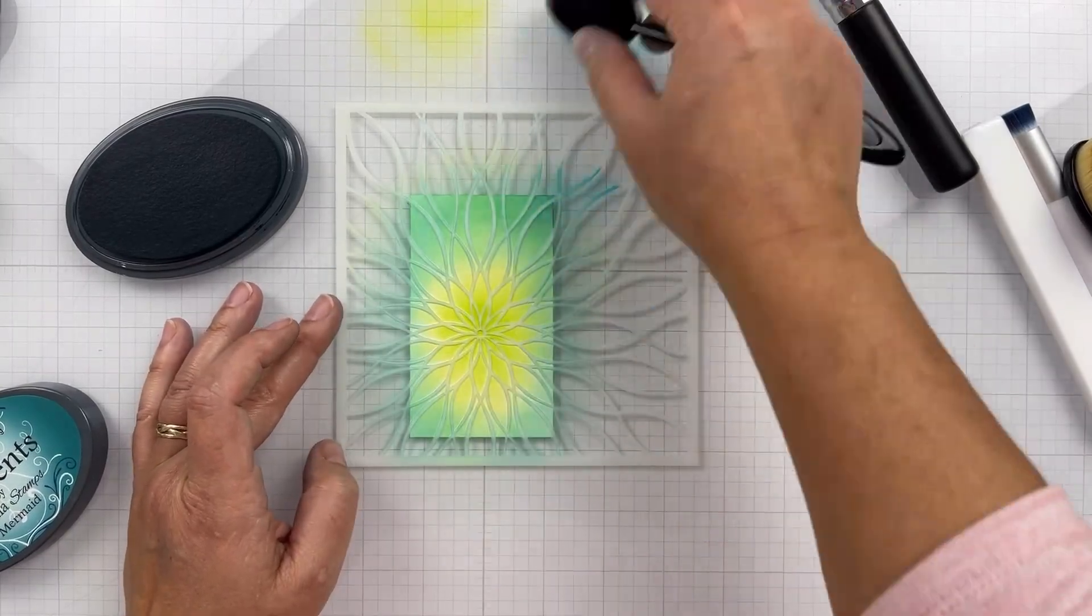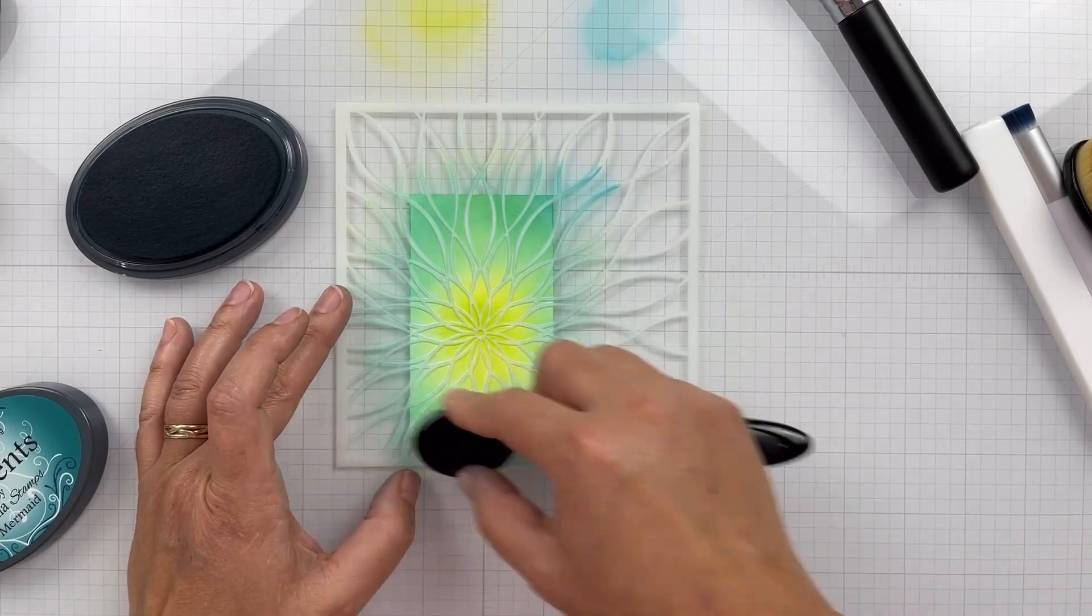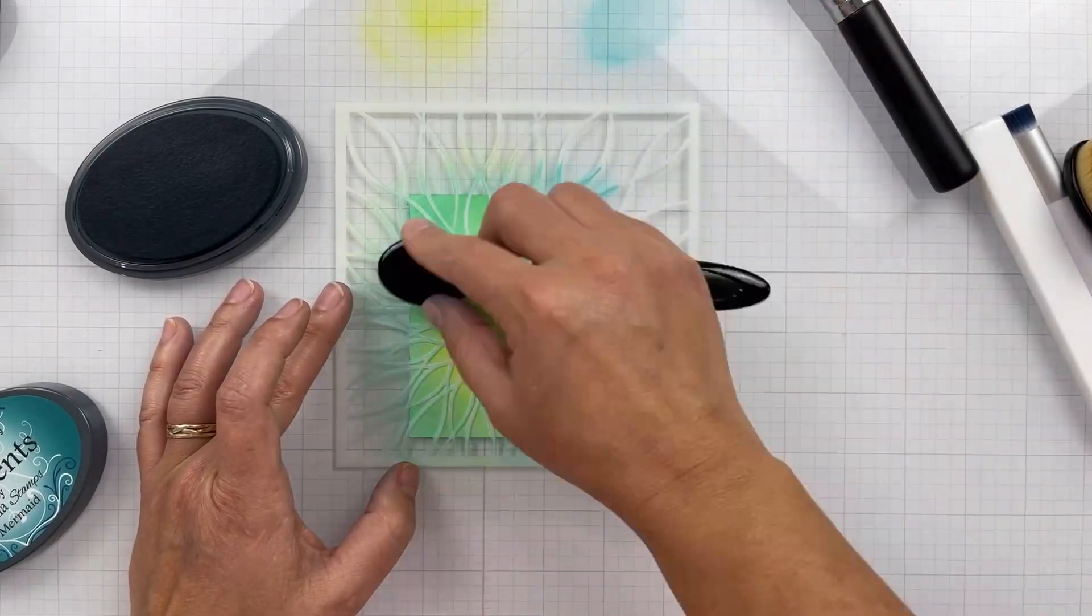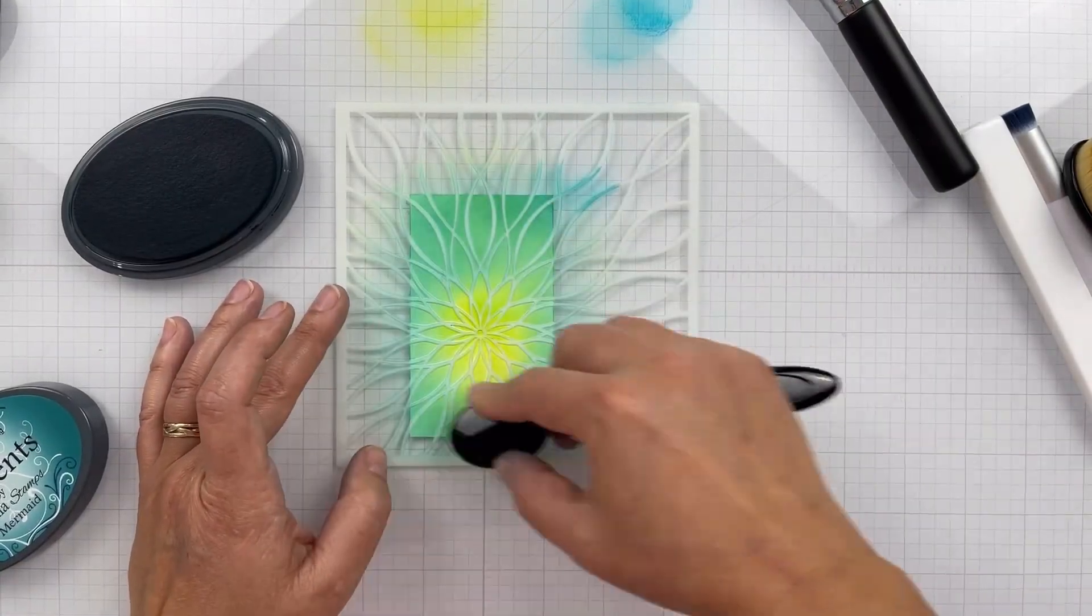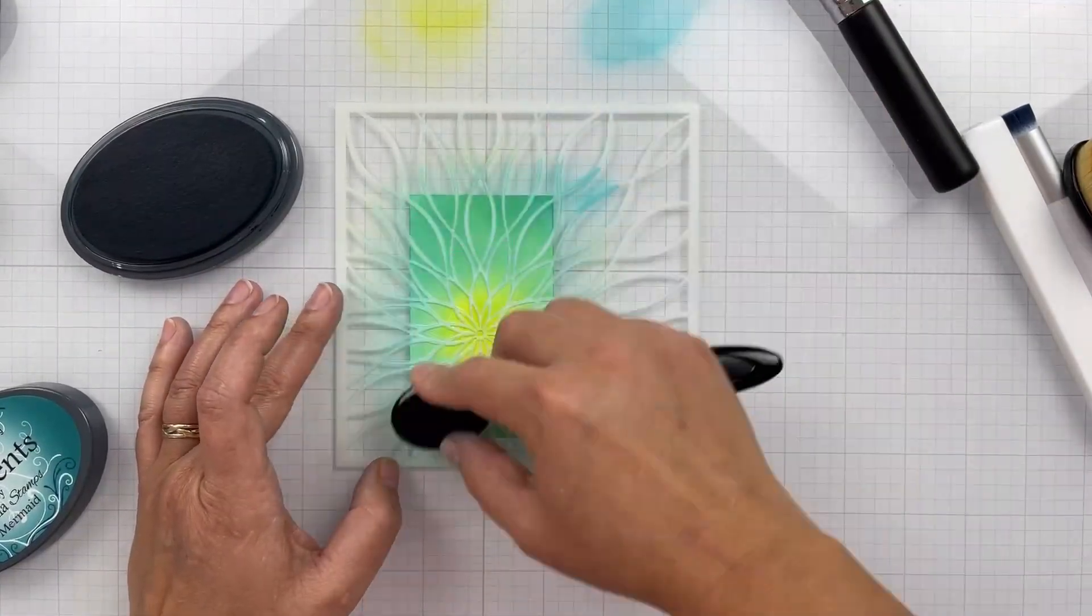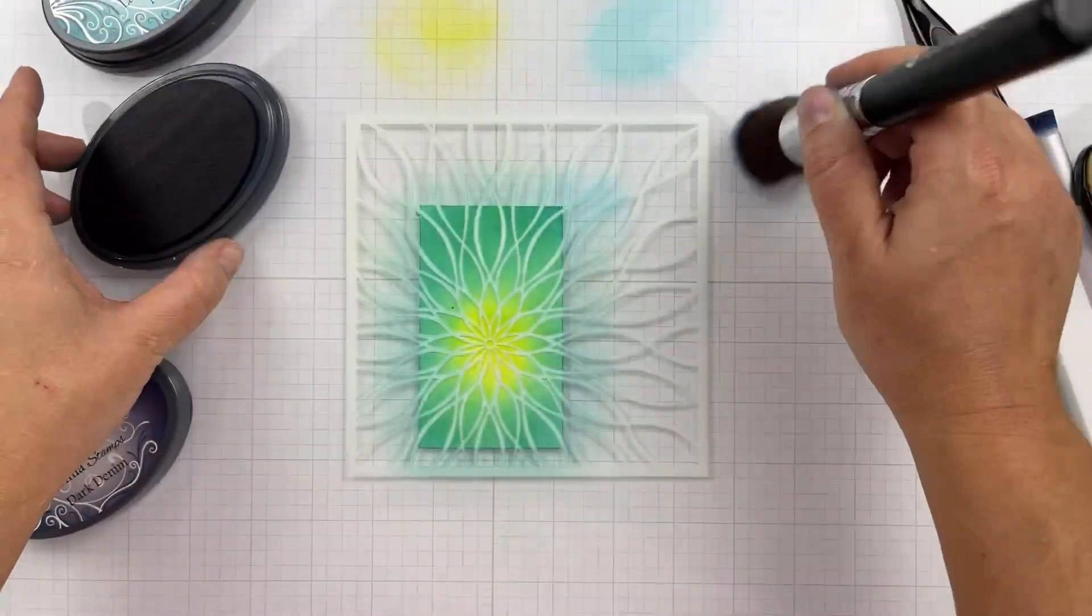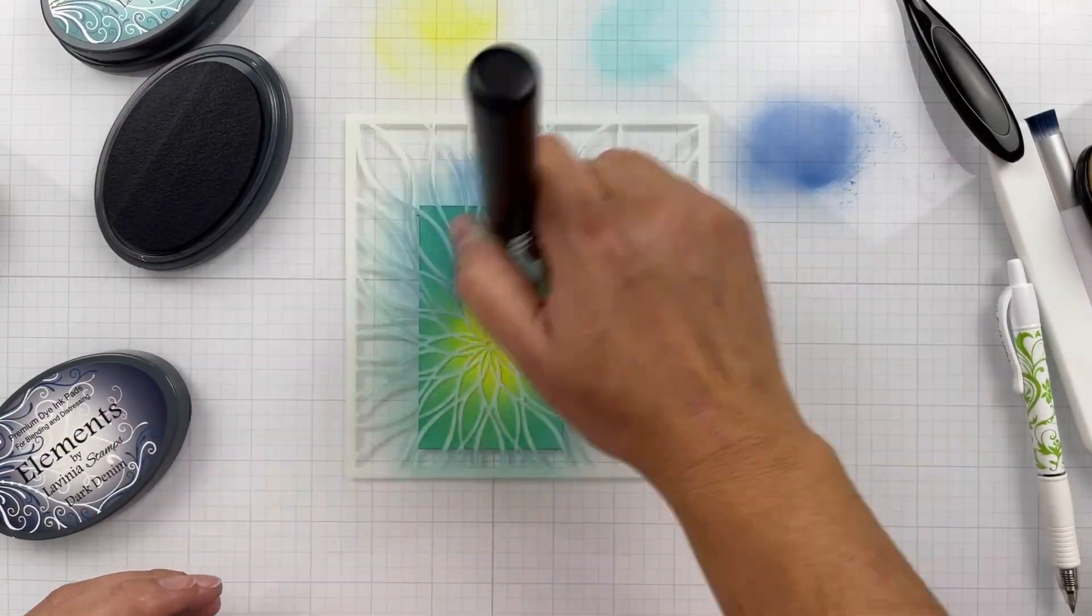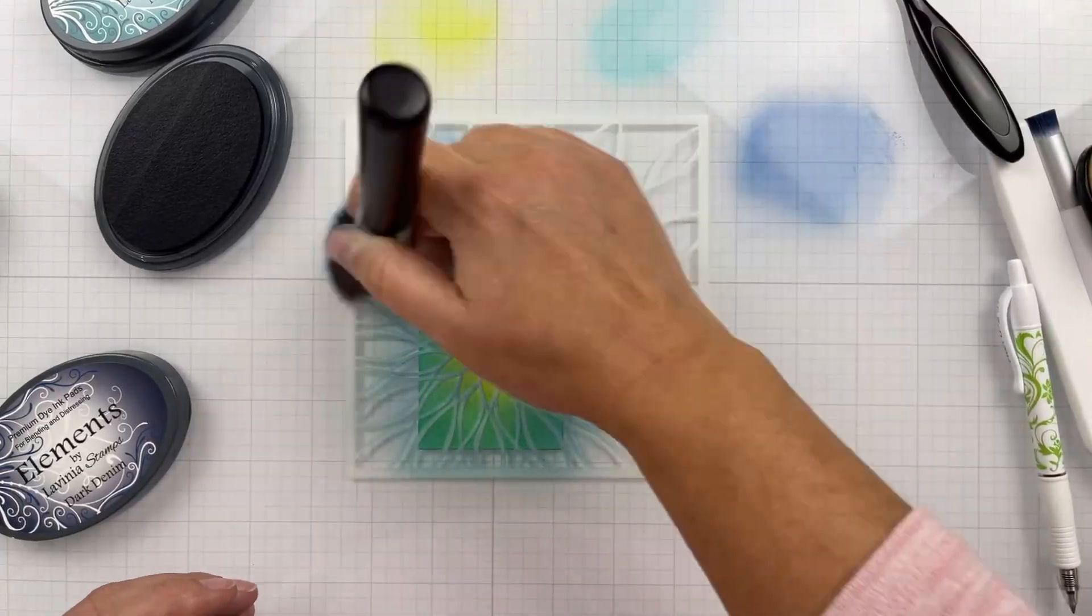Now I'm doing the second panel. I started with that Lime Punch, coming in again with the Mermaid. I didn't want too much Mermaid but just enough. I'm going to come in with that Dark Denim and the kabuki brush there and blend that around, and it creates the prettiest teal turquoise green. I just love it.